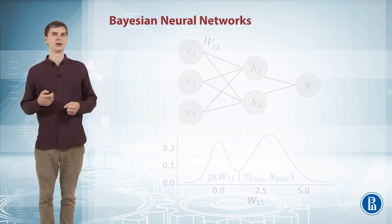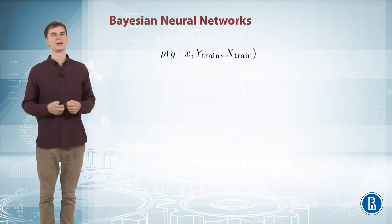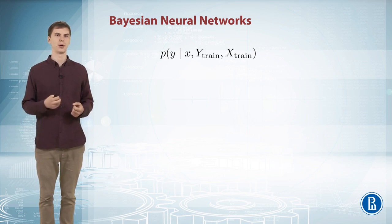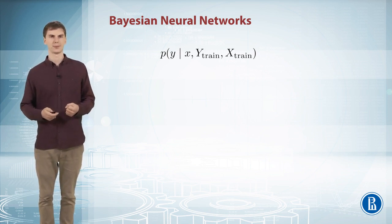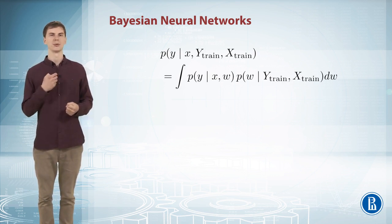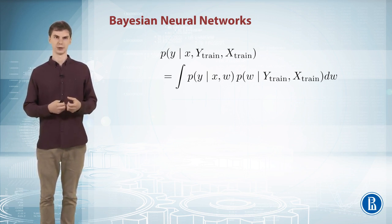And so to make a prediction for new data object x using the training dataset of objects x-train and y-train, we do the following. We say that this thing equals to integral, where we marginalize out w. So we consider all possible values for the weights w and we average the predictions with respect to them.